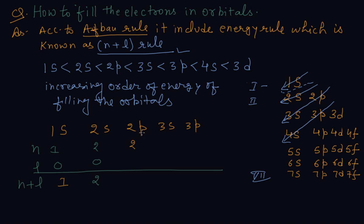For 3s, n=3 and l=0, so n+l=3. Interestingly, both 2p and 3s have n+l=3.